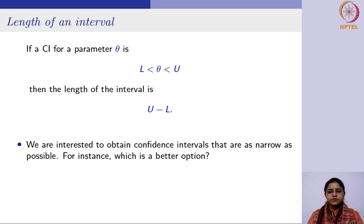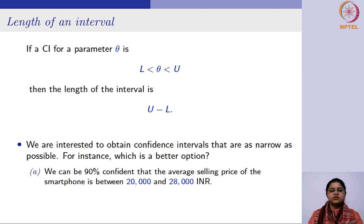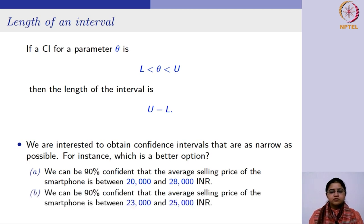Suppose you are interested in obtaining confidence intervals that are as narrow as possible, because we do not want them to be very wide. For example, suppose you say you are 90% confident that the average selling price of the smartphone is between 20,000 to 28,000. Now, your friend makes a statement that they are 90% confident that the average selling price is between 23,000 to 25,000.